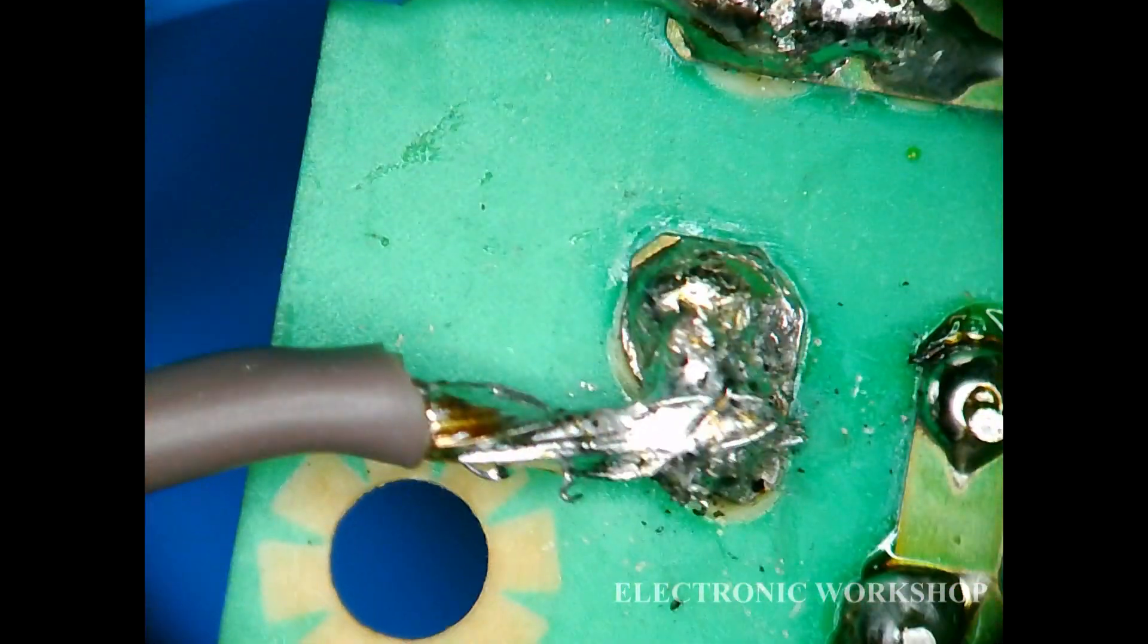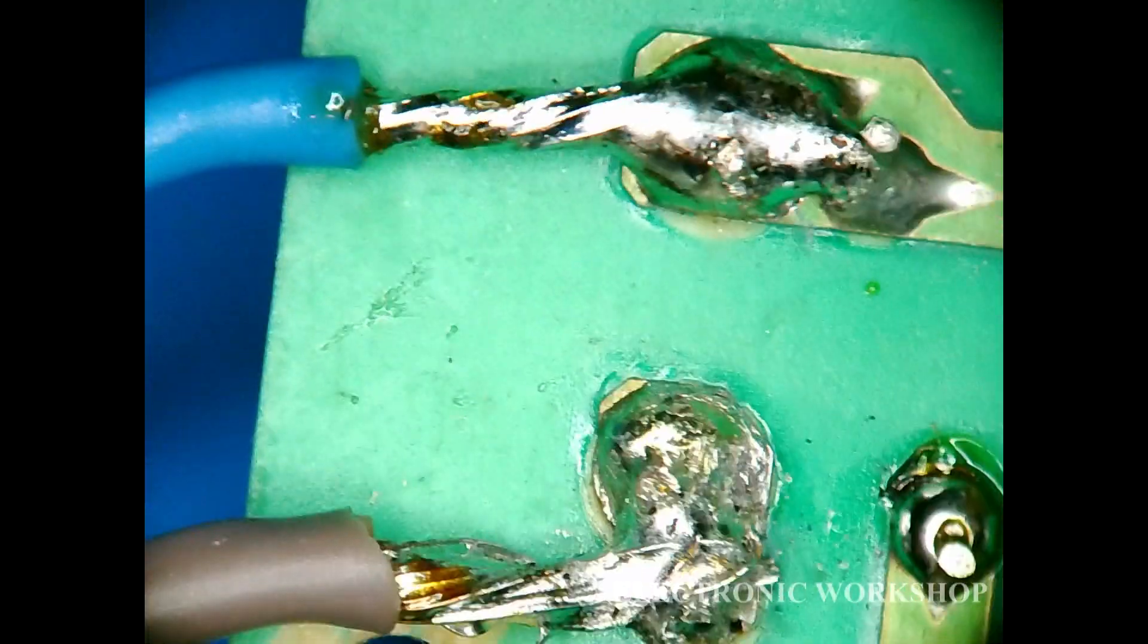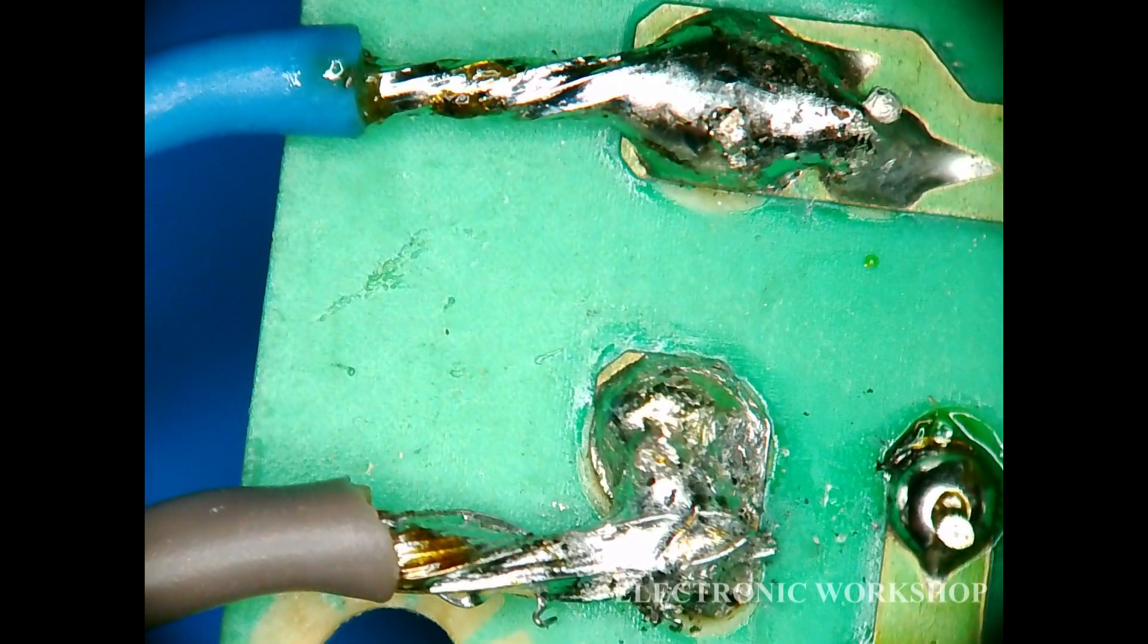What I have is I've got two leads soldered on here at the end. All this has is two wires really soldered in and they've got spade type connectors that go into a plug on the KVM switch itself.